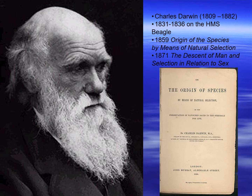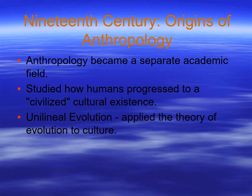Darwin came on the scene, publishing Origin of the Species in 1859. This very popular book talked about the mechanism for human evolution. Anthropology became a separate academic field in the 19th century; scholars studied how humans progressed to a civilized cultural existence, following out on that theme of evolution.